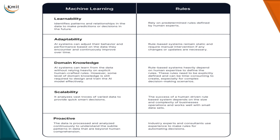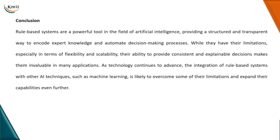When I talk about scalability, machine learning models analyze vast data and provide quick, smart decisions. But the success of human-driven rule-based systems depends on the size and complexity of the operations and data. Regarding being proactive, machine learning data is processed and analyzed continuously to understand internal patterns that are beyond human comprehension. Rule-based systems need industry experts and consultants to understand and experience the working of the data. For these reasons, we usually prefer machine learning systems over rule-based systems.